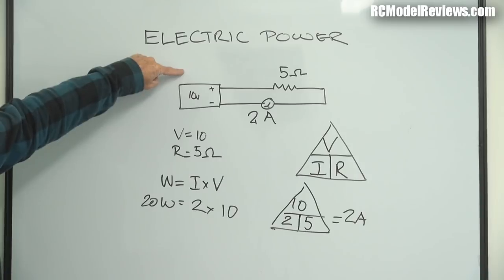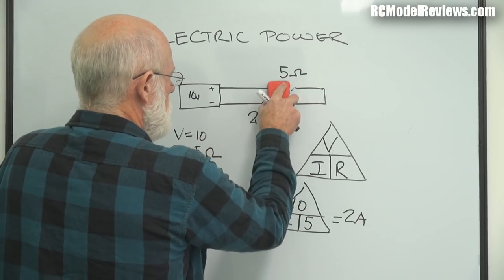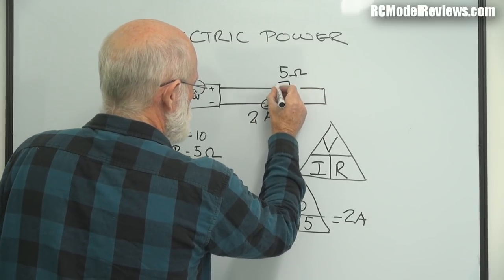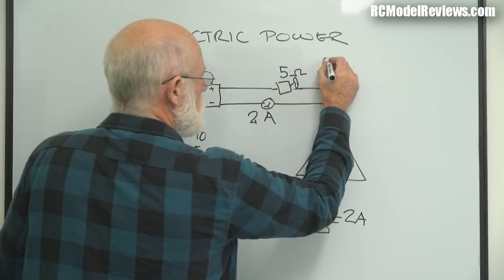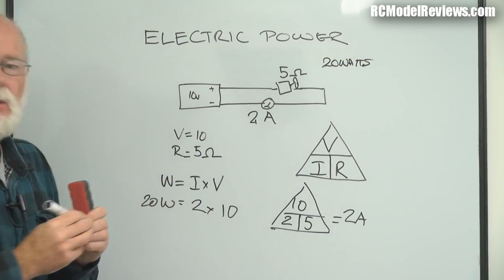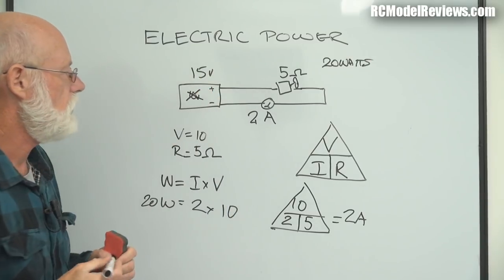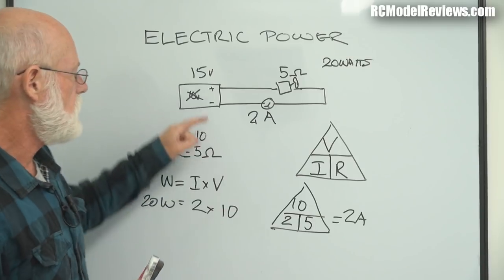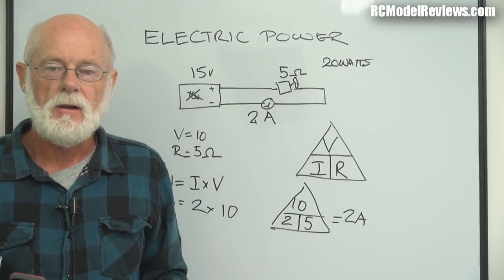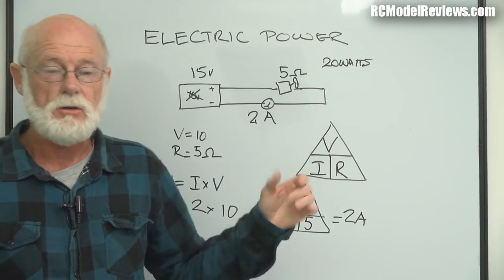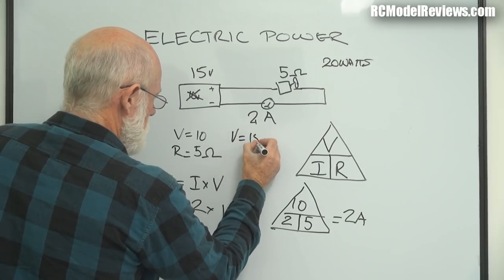Now let's look at how this applies to a model plane. Here's a battery and here's a motor with a propeller, with an effective resistance of 5 ohms. We've got 2 amps flowing and it's doing 20 watts. What happens if we increase our battery voltage to 15 volts? The voltage is the pressure, so the pressure pushing electricity through the circuit goes up. If the pressure goes up, the flow will increase - assuming the resistance hasn't changed.